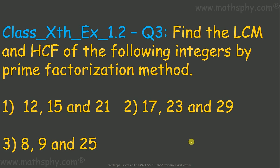This question says: find the LCM and HCF of the following integers by prime factorization method — 12, 15 and 21; 17, 23 and 29; 8, 9 and 25. In the previous exercise we had two integers, but here we have three integers to find the LCM and HCF.